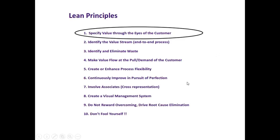We're going to talk about visual signals as well in visual management. Create or enhance process flexibility — how can people do more, what are people trained on? These questions can also be answered in visual management. Continuously improve in pursuit of perfection. Involve associates. Create a visual management system — that's really what we're going to key in on today. Do not reward overcoming; really get to the root cause. Quit putting a Band-Aid on something. And don't fool yourself — think about this in a common sense approach.